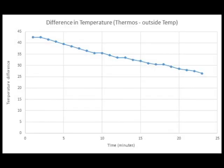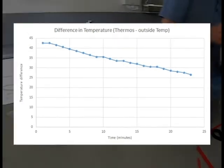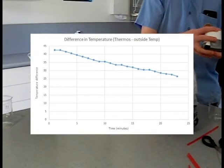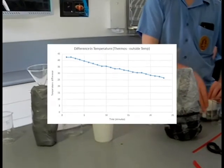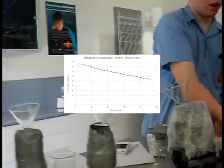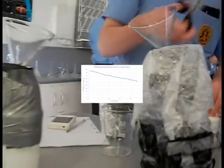A graph of the difference in temperature between the object and the surroundings against time will be an exponential decay graph, like radioactive decay. The flatter the graph, the longer the half-life, and the better your insulation.